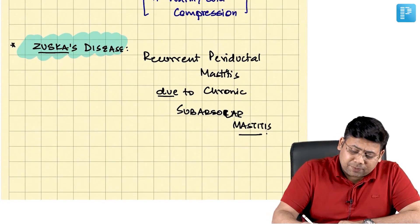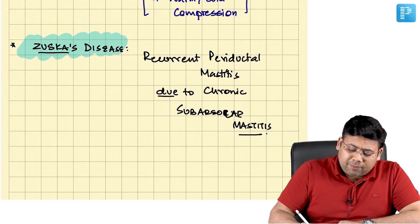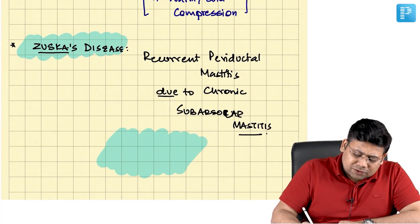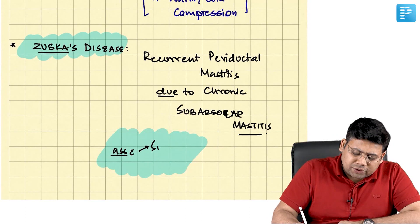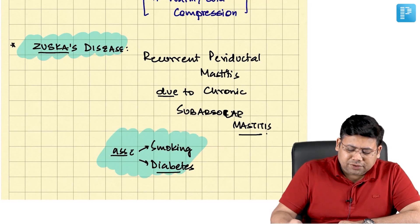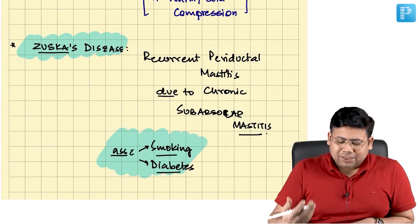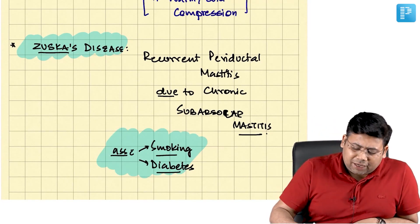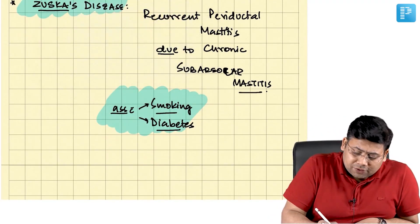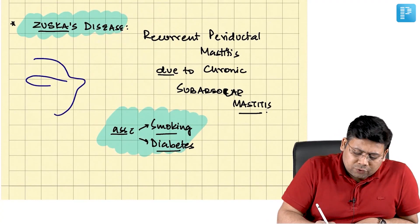Why does this happen? Remember, it is again associated with chronic inflammatory states. It is associated with smoking and it is associated with diabetes. So smoking and diabetes are the two important reasons.